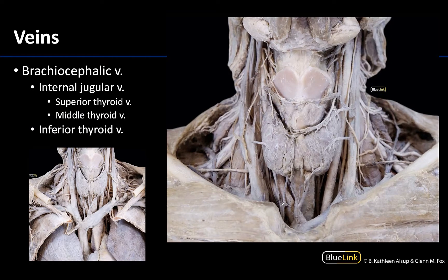Now let's focus on the veins that drain the thyroid and parathyroid glands. There are two arteries that supply these glands, but there will be three sets of veins that drain the region. The superior thyroid vein is located in the superior region of the thyroid gland and is closely associated with the superior thyroid artery, which comes off the external carotid artery. The superior thyroid vein drains into the internal jugular vein. The middle thyroid vein also drains into the internal jugular vein, located in the middle region of the thyroid gland, and may be associated with the inferior thyroid artery, though that relationship is not as close.